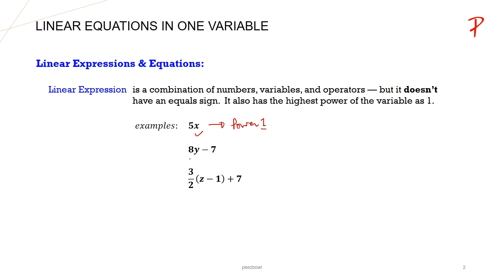In the second example, 8y-7, y is the variable and it has a power of 1. In the third example, 3/2·z-1+7, the variable z has a power of 1. So all these are called linear expressions.